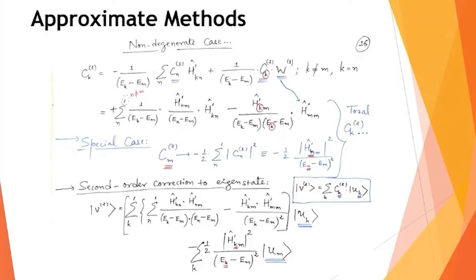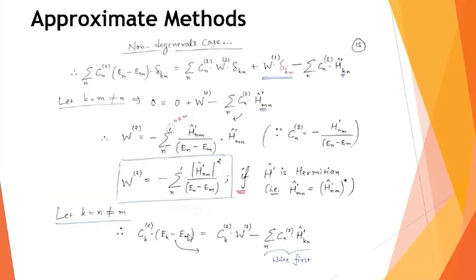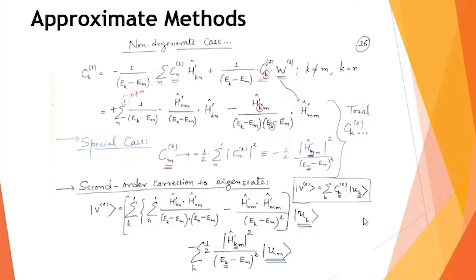The slide you are seeing is what we covered last time. Looking at the previous slide, w2 is the second-order correction introduced because of the perturbation H'. This is the second-order term for the energy eigenvalue. Similarly, from the mathematics last time, v2 — the second-order correction to the eigenstate or eigenfunction — was also obtained.